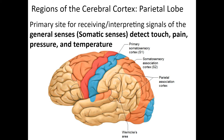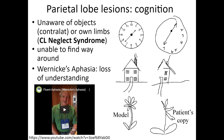At the junction of the parietal and temporal lobes is Wernicke's area, associated with the ability to comprehend spoken words. Damage to Wernicke's area causes Wernicke's aphasia — the patient doesn't understand that what they're producing doesn't make any sense, and their words come out jumbled, not always appropriate for the situation or sentence they're trying to formulate.